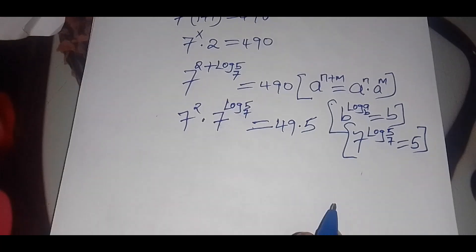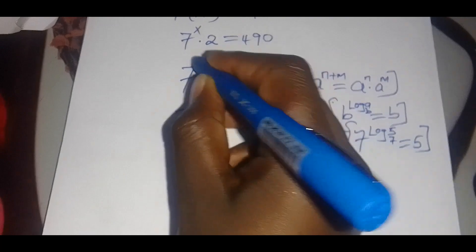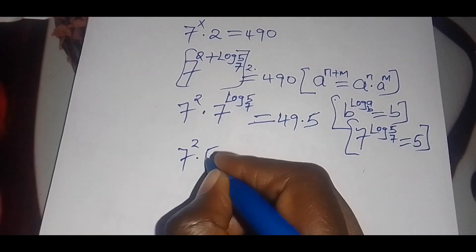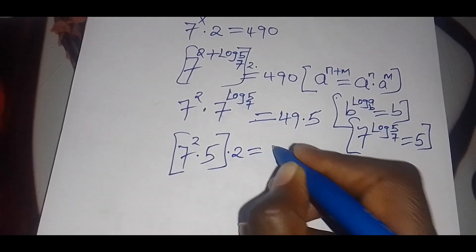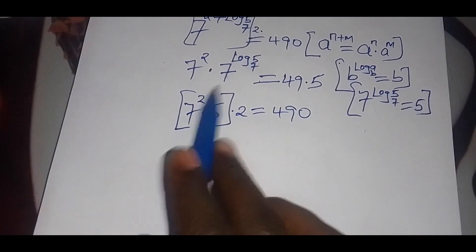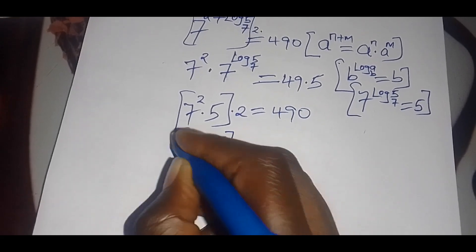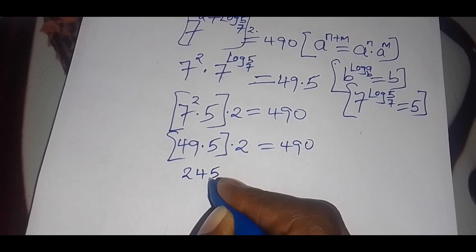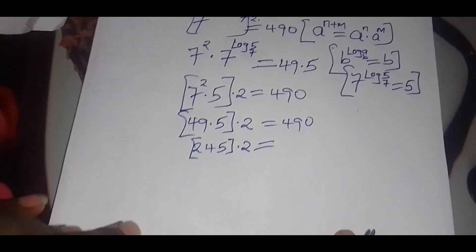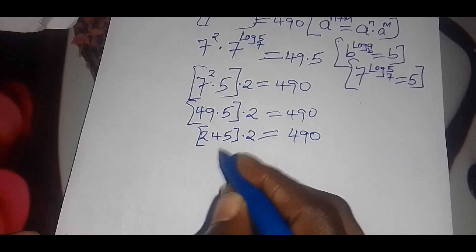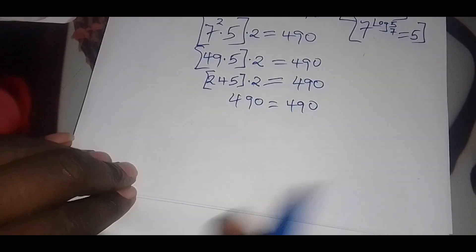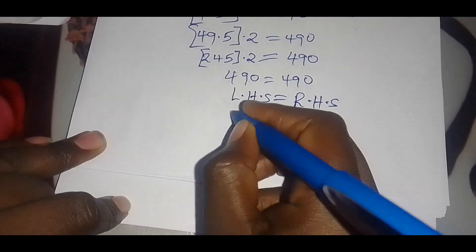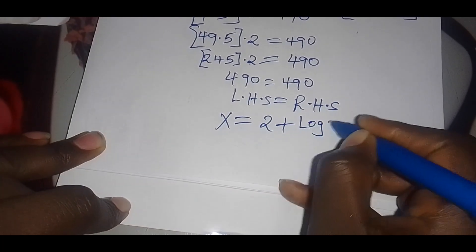So we substitute: we have 49 multiplied by 5, and everything should be multiplied by 2. So 49 times 5 is 245, multiplied by 2 gives 490, which is equal to 490. So the left hand side is equal to the right hand side, and that verifies that x equals 2 plus log base 7 of 5 is the correct answer.